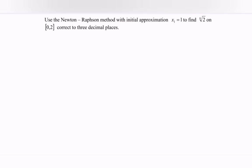Hello everyone, in this video I'm going to discuss an example for the Newton-Raphson method. Use the Newton-Raphson method with initial approximation x₁ = 1 to find the 6th root of 2 on [0,2], correct to 3 decimal places.